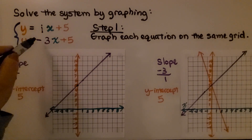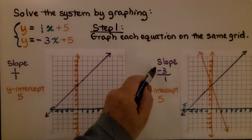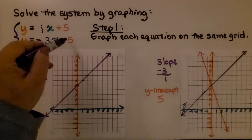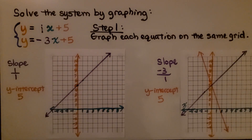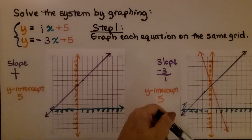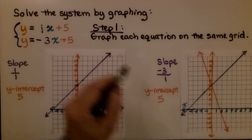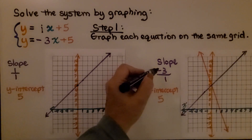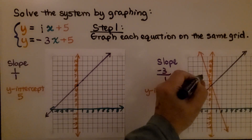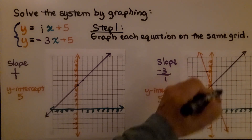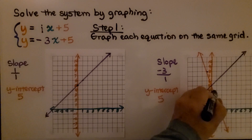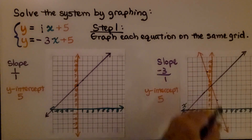For the second equation, the slope is negative 3, written as negative 3 over 1, and the y-intercept is positive 5. A negative slope falls to the right, so our line goes down in that direction. Starting at the y-intercept of positive 5, we go down 3 and over 1 to plot points, then take a straight edge and draw the line.